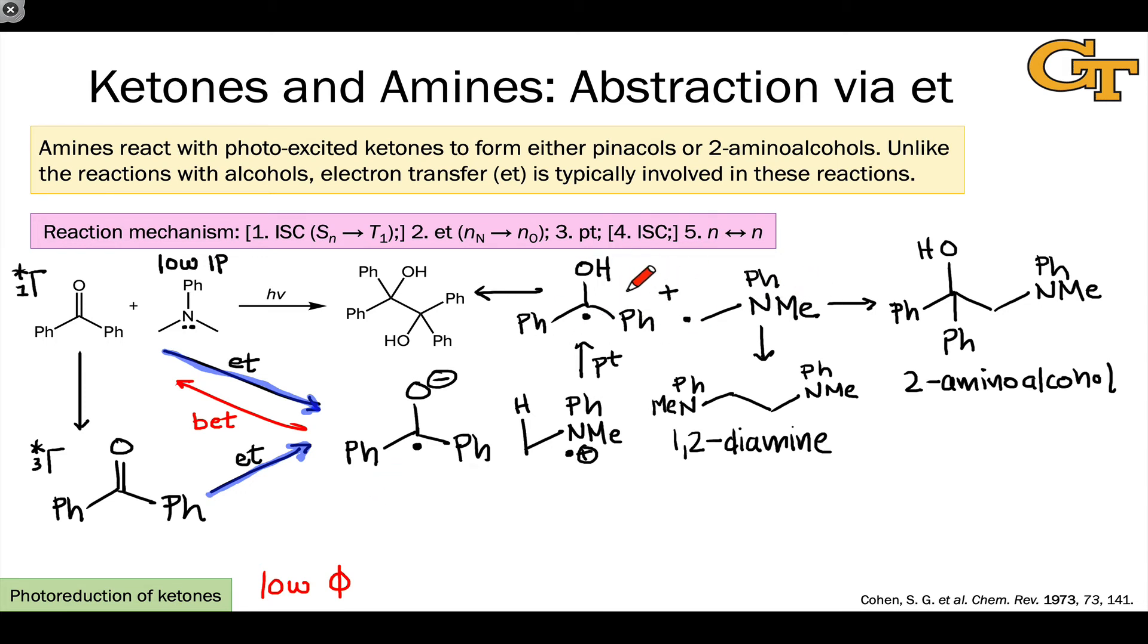Reverse hydrogen transfer is also an issue. You can imagine that if the ketyl radical simply returned a hydrogen to the alpha-amino radical, we would end up back at starting materials. Back hydrogen transfer can be an issue in these reactions that limits the quantum yield as well. This doesn't mean that the chemical yield is necessarily low. It just means we need to use more light to get this reaction to go.